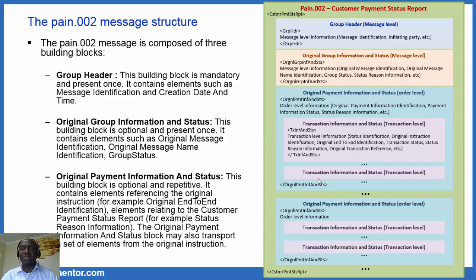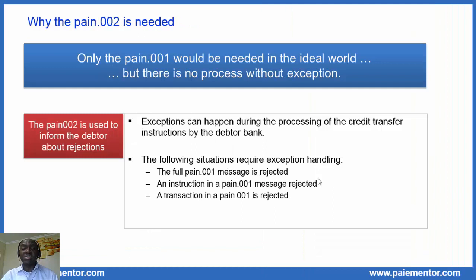Pretty interesting how this message can be used. Now, why is the PAIN.002 message actually needed? The answer is very simple: exception handling. In an ideal world, only the PAIN.001 will be needed, but we know there is no process without exceptions. Exceptions can happen during the processing of the credit transfer message and related instructions. Issues can occur at message level, at order level, or at instruction and transaction level. As a result, the full PAIN.001 message can be rejected, or an instruction or transaction within it might get rejected.